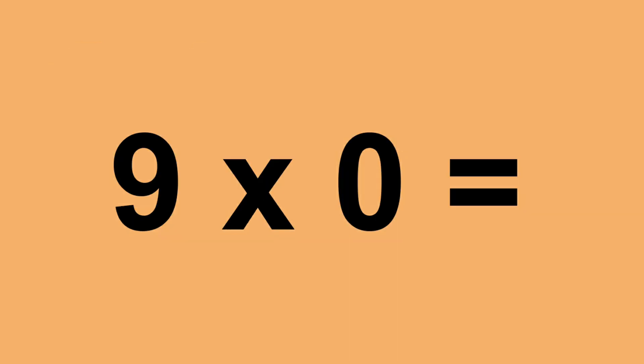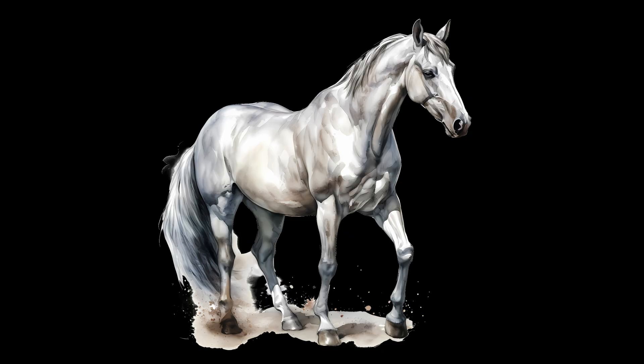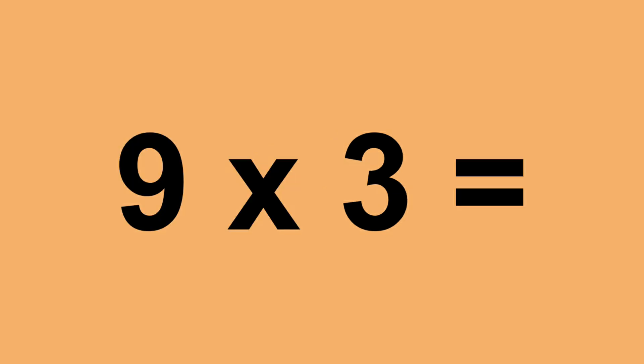9 times 0 equals 0. 9 times 1 equals 9. 9 times 2 equals 18. 9 times 3 equals 27.